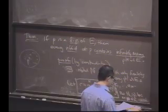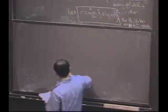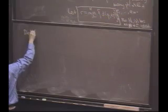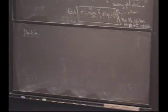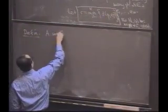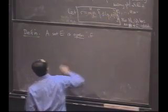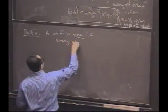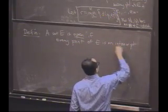Let's define a few more terms. There's a lot of terminology today, but it's basic for everything that follows. We have a concept for a set that looks like the nose here — not geometrically like the nose, but it has the property that every point is an interior point. We call such a set open. A set E in a metric space X is open if every point of E is an interior point of E.